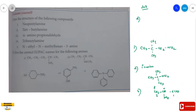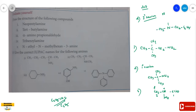The fourth one is tribenzylamine. It has three alkyl parts, so it is a tertiary amine. The functional part is N, to which three benzyl groups are attached. The benzyl group is C₆H₅CH₂. So the structure is N(CH₂C₆H₅)₃ — tribenzylamine.